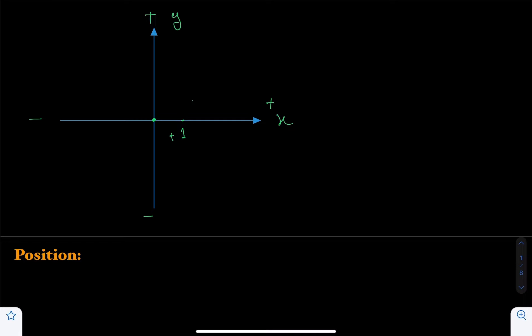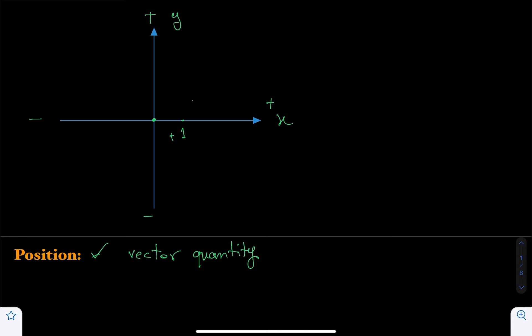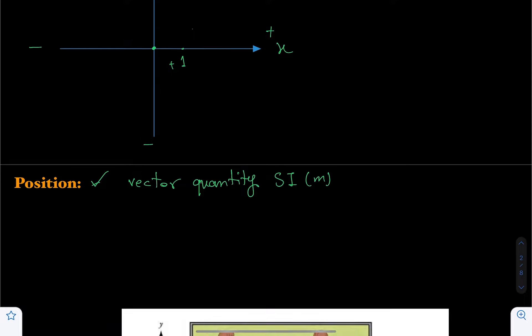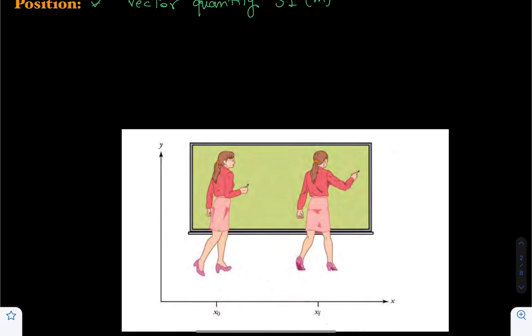Since we have a frame of reference, we can simply define position. Position is a vector quantity, and the unit of position is meter. Whenever an object is somewhere along the x-axis, that point is called position, and we can represent it by a vector. From there, from position, we can move on to the definition of displacement.